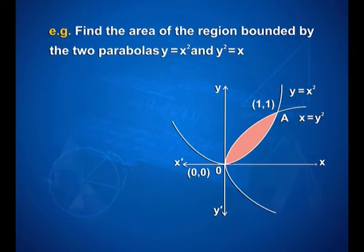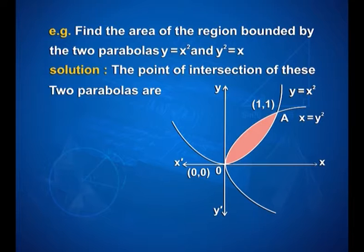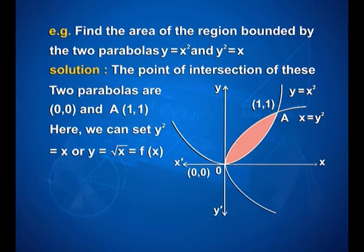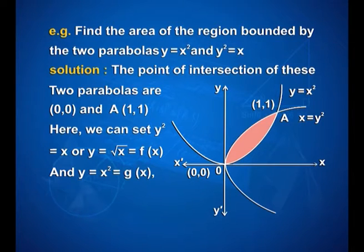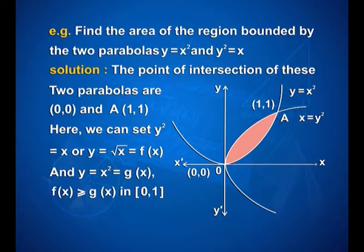Now let us look into one more interesting example: find the area of the region bounded by the two parabolas y is equal to x square and y square is equal to x. The points of intersection of these two parabolas are (0, 0) and A, that is (1, 1). We set y square is equal to x, or y is equal to square root of x, as f(x), and y is equal to x square as g(x), where f(x) is greater than or equal to g(x) in the interval [0, 1]. We can see the two parabolas with points of intersection at (1, 1) and the origin.